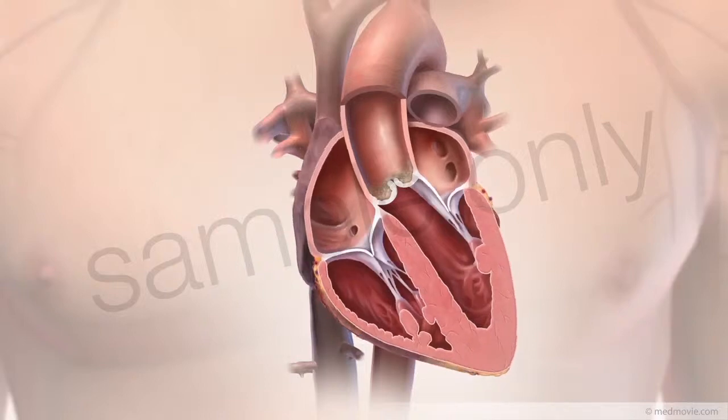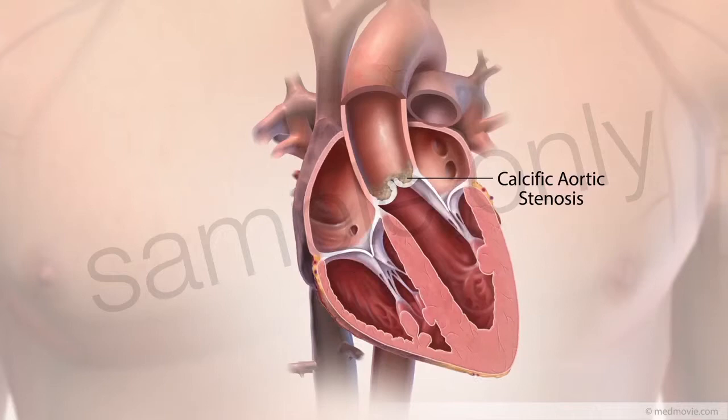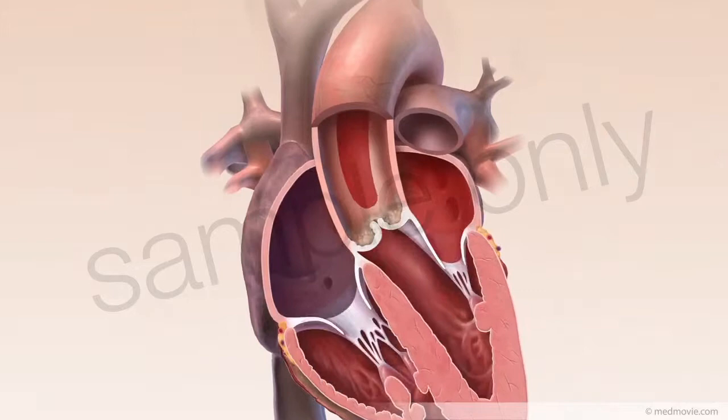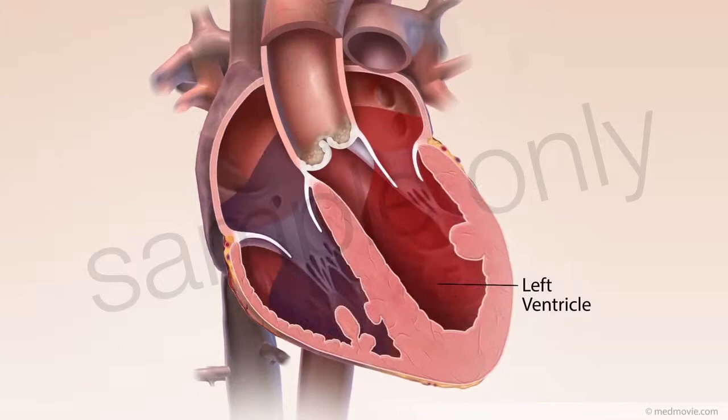Aortic valve disease is an indication for transcatheter aortic valve replacement. Calcific aortic stenosis is shown here. The aortic valve is narrowed and blood cannot flow easily into the aorta, causing pressure to build in the left ventricle. This can damage the heart muscle over time.